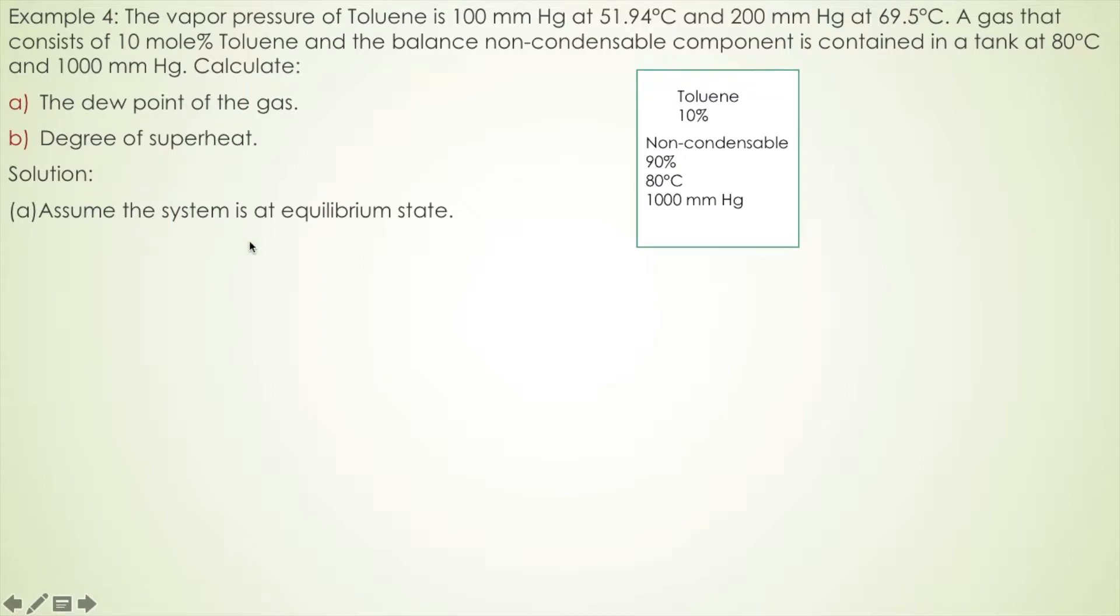First, let's assume that the system is at equilibrium state, so the mole fraction does not change with time. Then the partial pressure of toluene gas is equal to the mole fraction of toluene, as given, times the system pressure. So you get 0.1 times 1000 mmHg, which equals 100 mmHg.